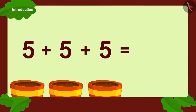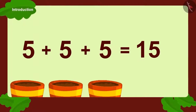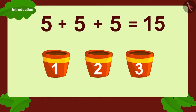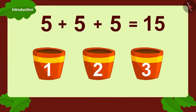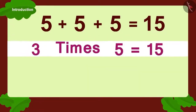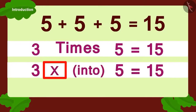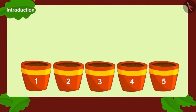What number do we get? Yes, Babban planted fifteen seeds in total. Now, how can we write it in a different form? Three times five, or three multiplied with five.